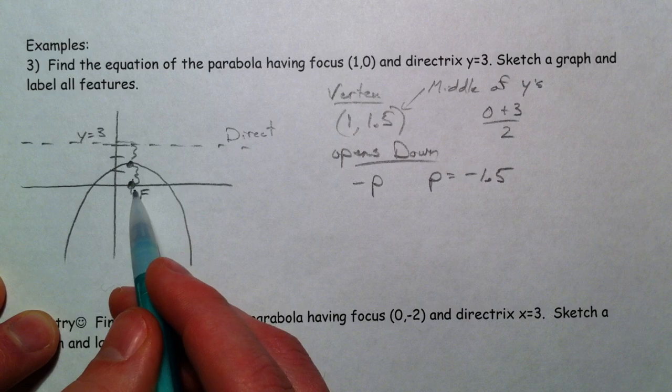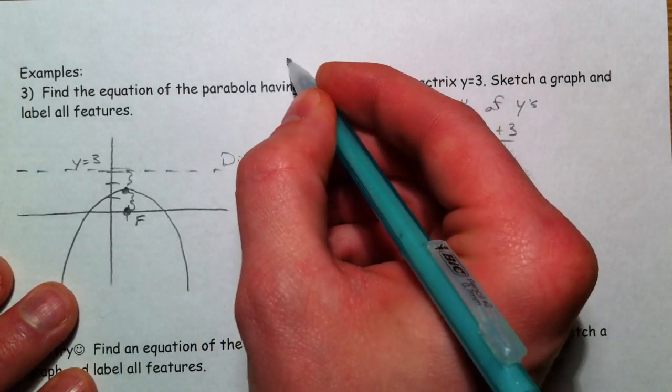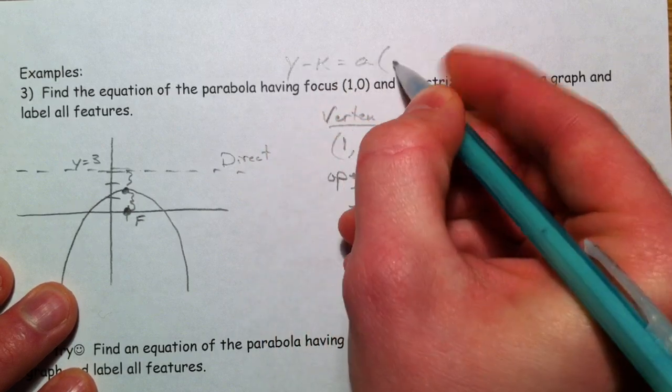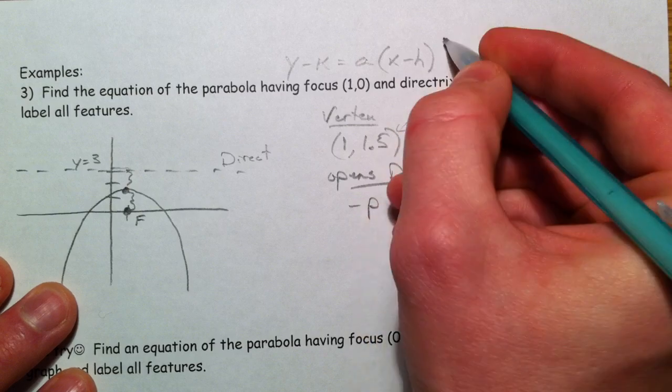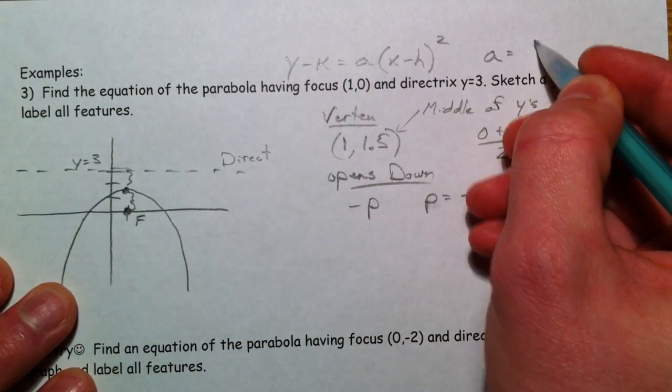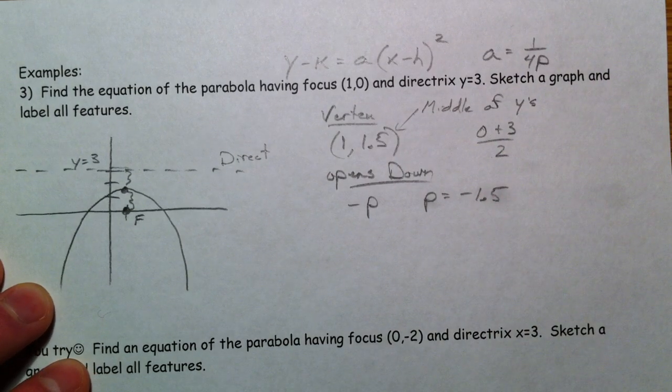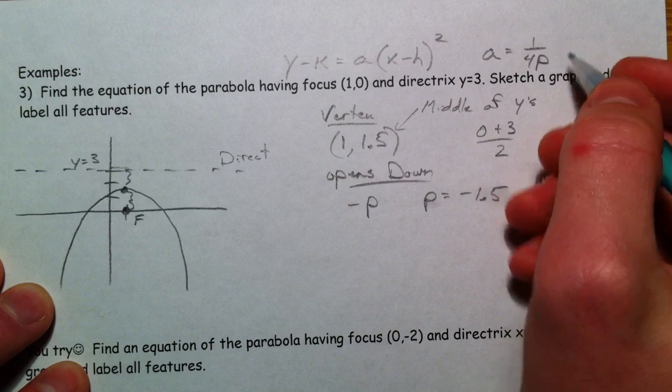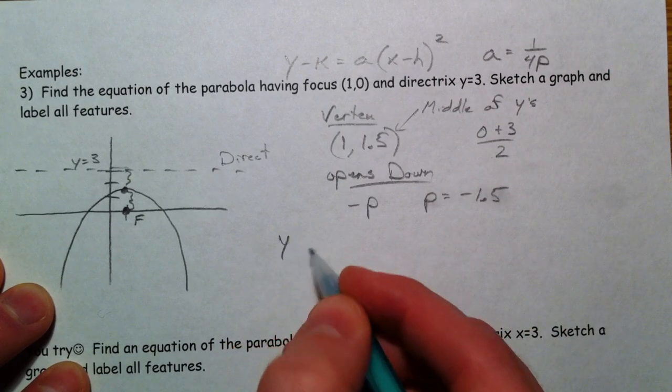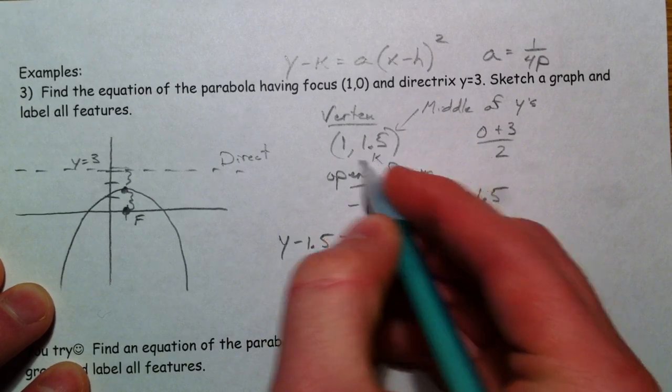And so we have a vertex equation. We're going to use the y minus k equals a times x minus h squared. Remember that a is equal to 1 over 4p. So y minus 1.5, our k value, vertex...